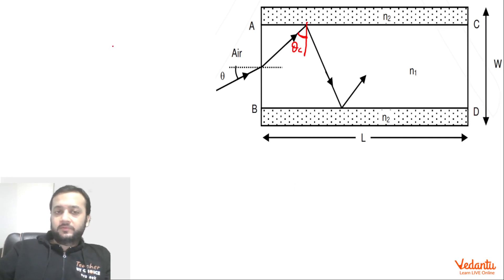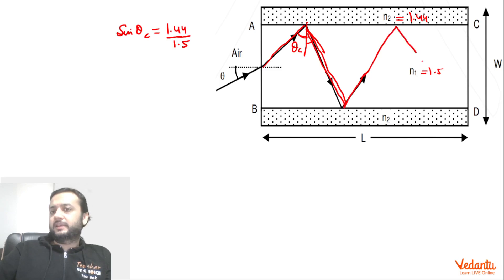So now we can see that sine theta critical is nothing but n2 was 1.44 and n1 was 1.5, so 1.44 divided by 1.5. We can say that the ray has traveled this path plus this path, this will also be theta critical, so basically the ray is traveling like this.